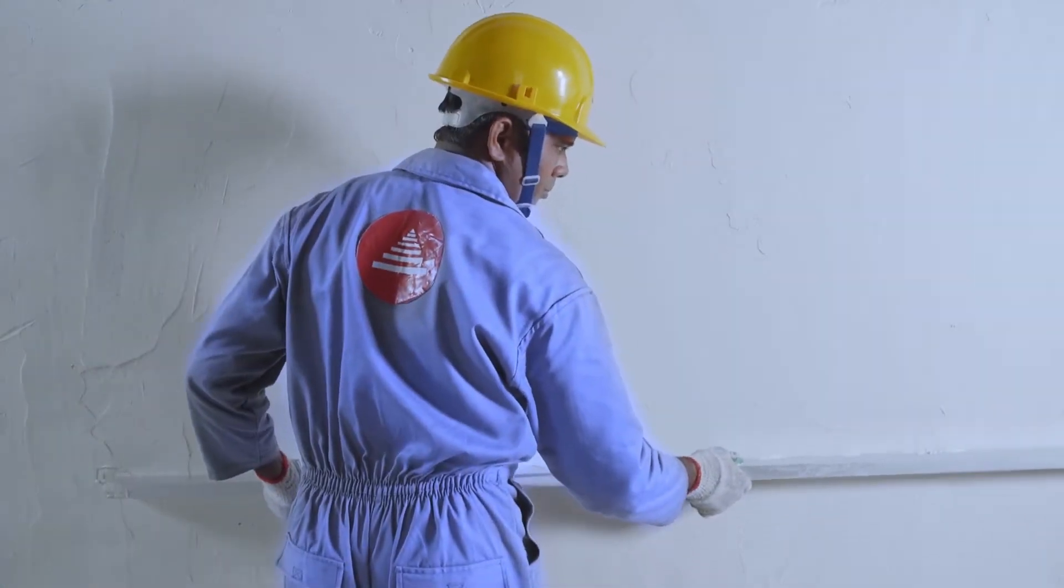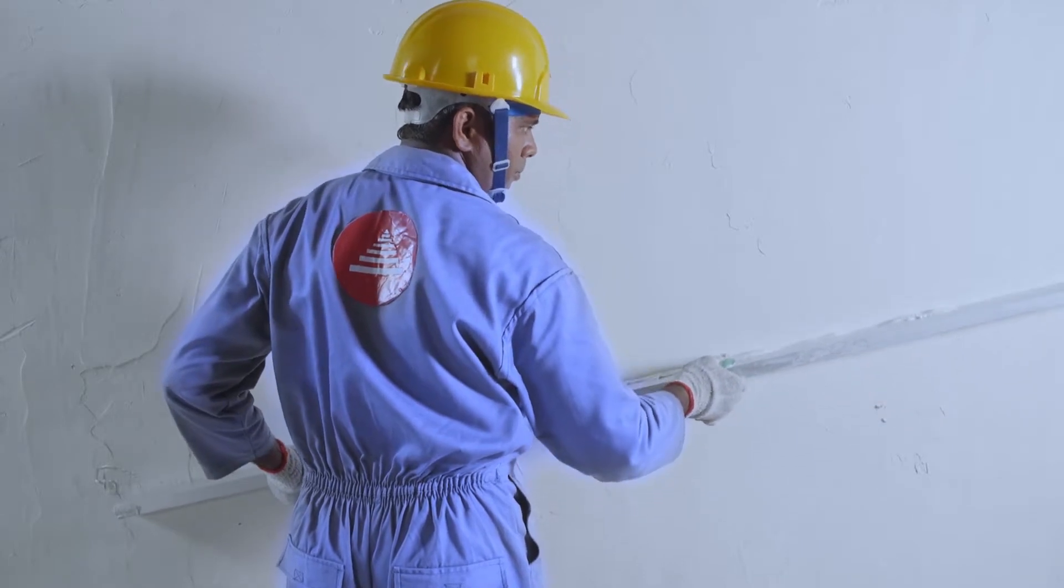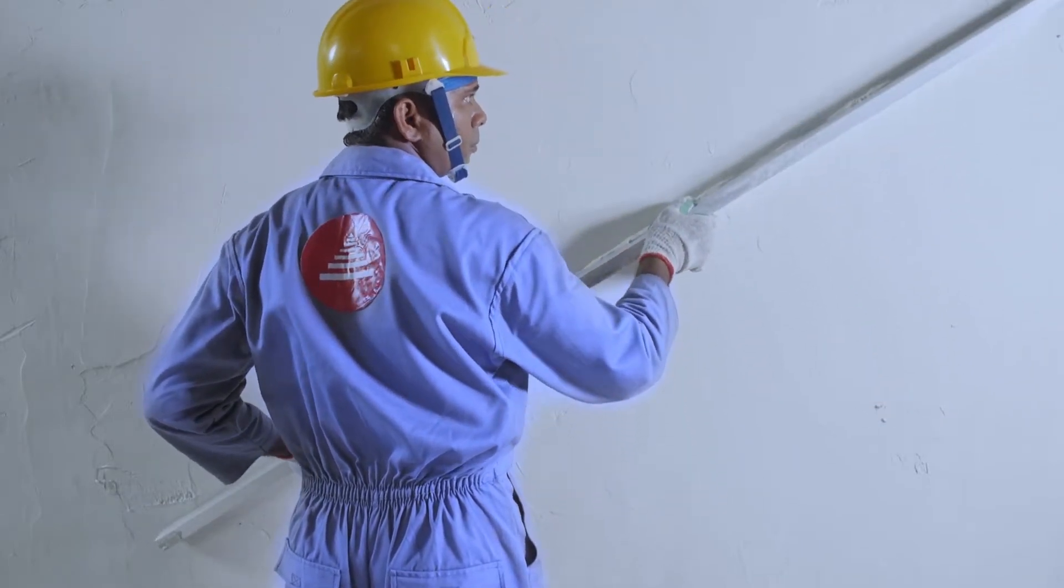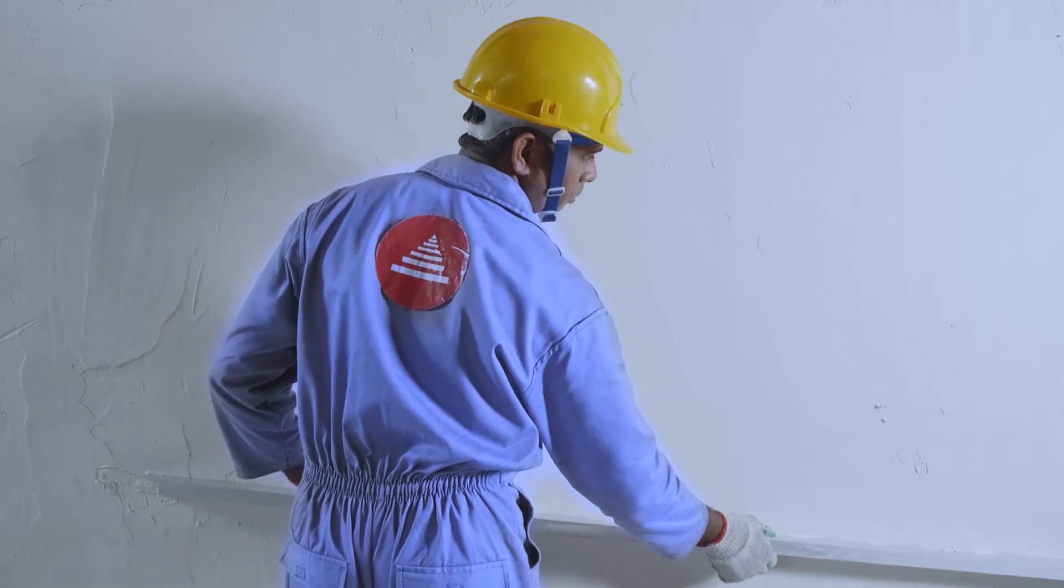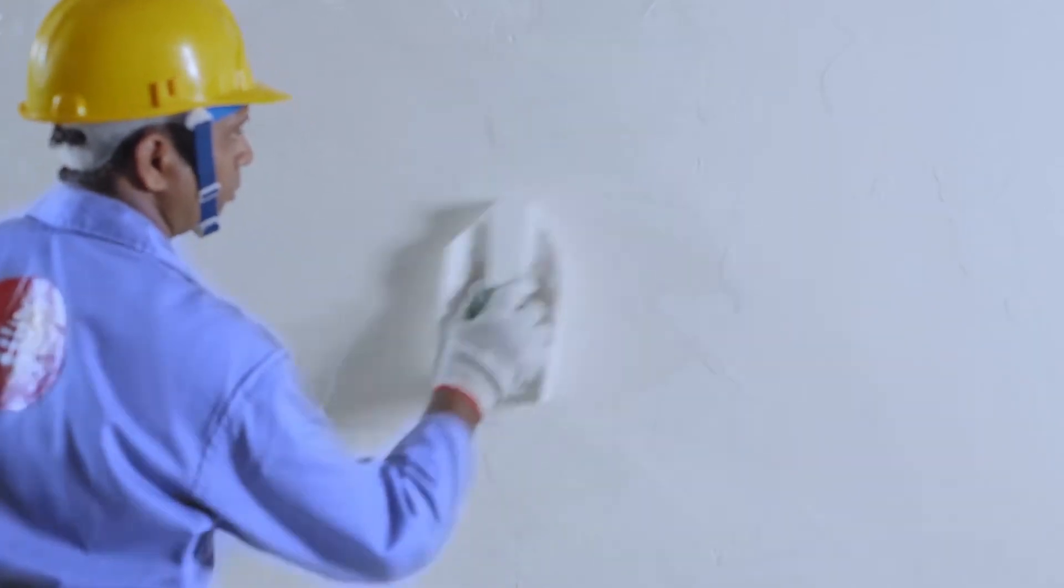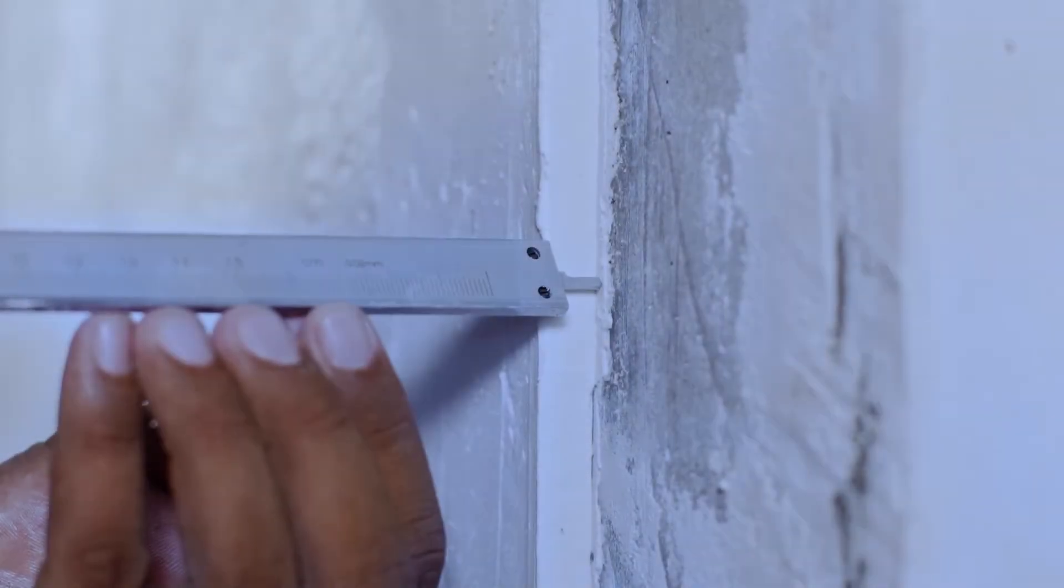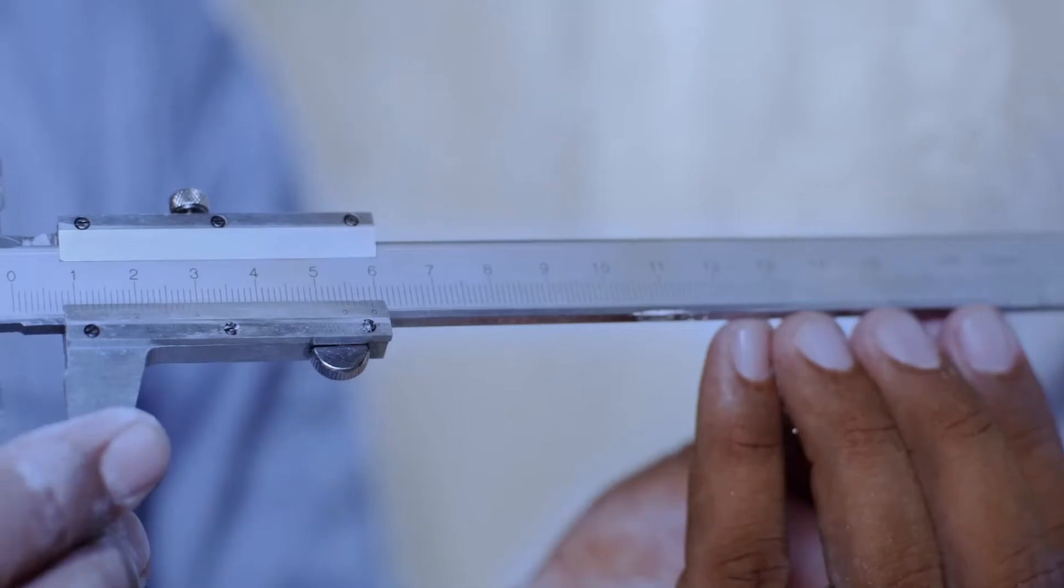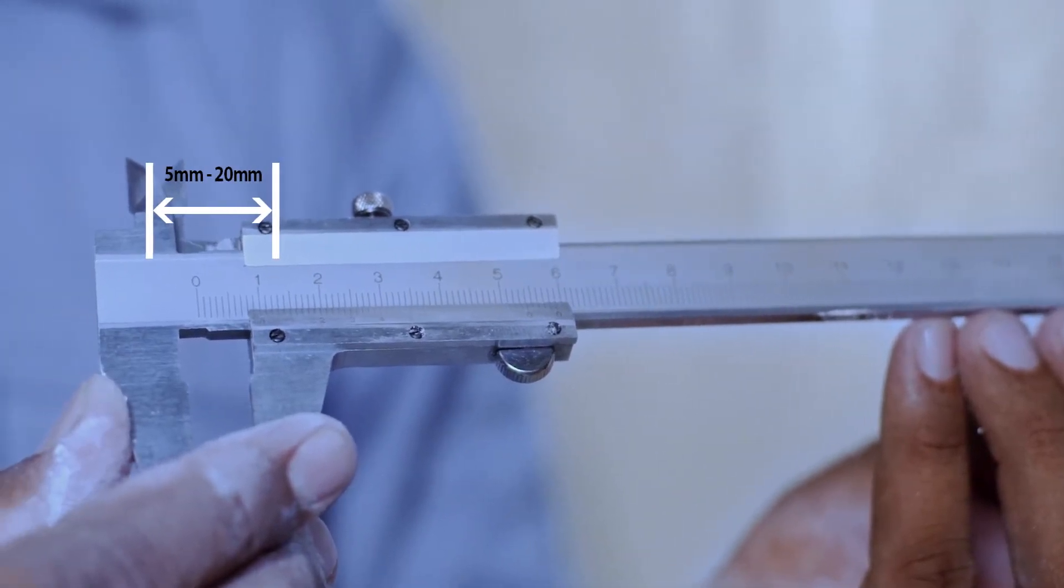Use the straight edge level to create an even plaster surface. For best results, try to maintain a coating thickness within 5 to 20 mm.